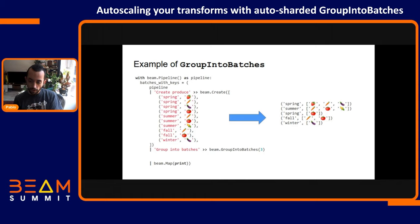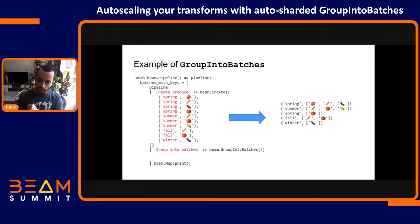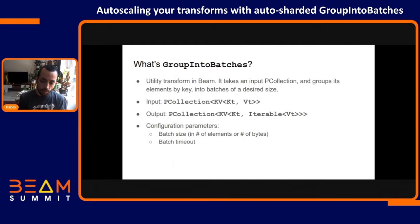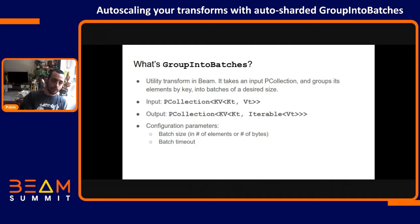We also have two elements under fall and one under winter. When we group into batches of three, whenever we get three elements into the batch, the transform will fire. If it doesn't get three elements into the batch, it will wait until the end of the window and fire. This is configurable — your transform can be configured by batch size, how many elements you want in your batch, the byte size of the batch, and also the timeout. In a streaming pipeline, you might want to group elements into batches but not wait more than, say, 10 seconds to fire any given batch.